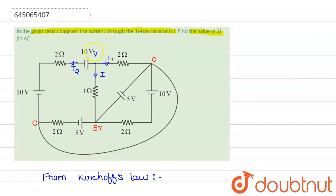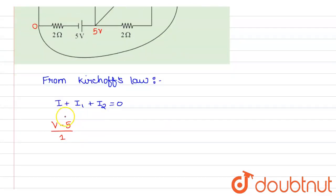If we talk about i1, our i1 will be v minus 0 divided by 2, because 2 is the resistance here. So I am writing: (v - 0)/2.